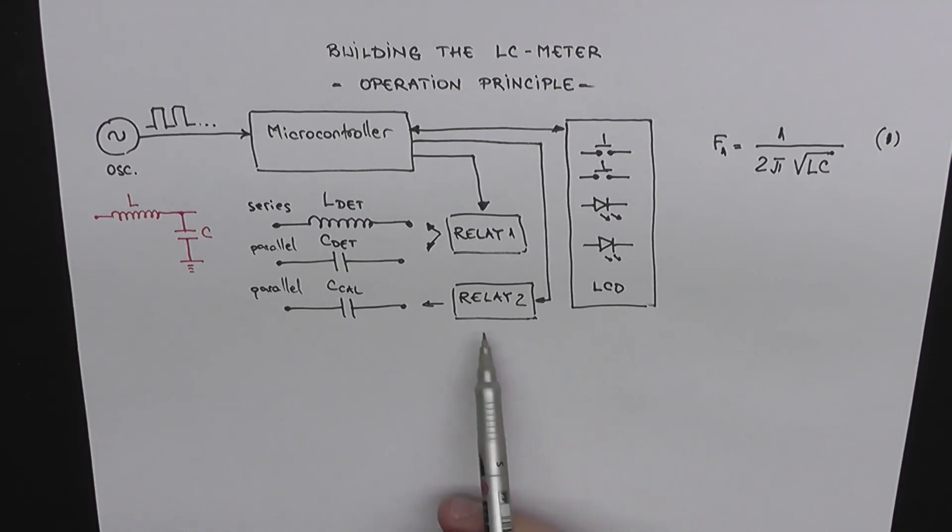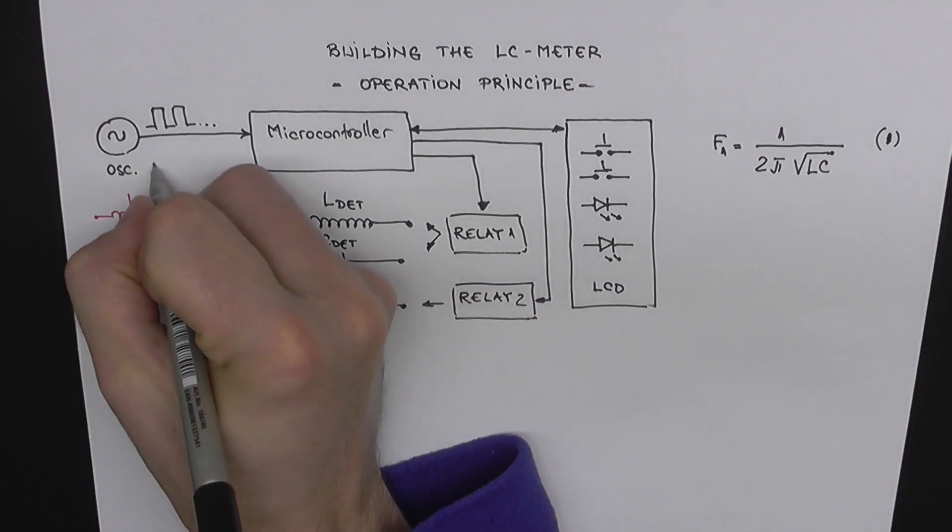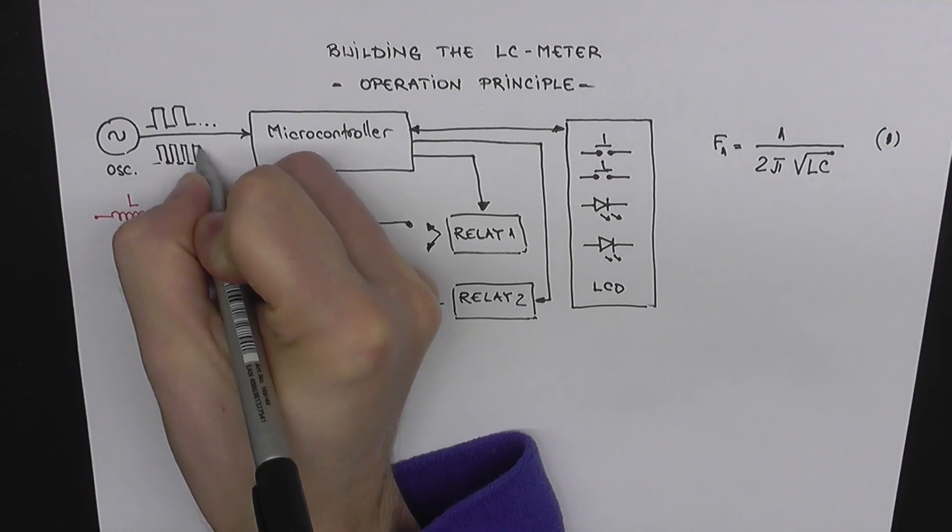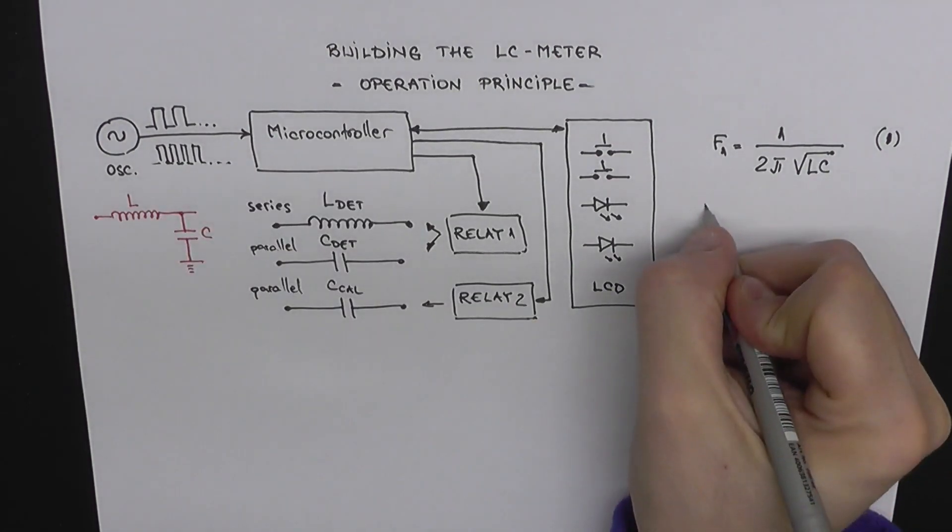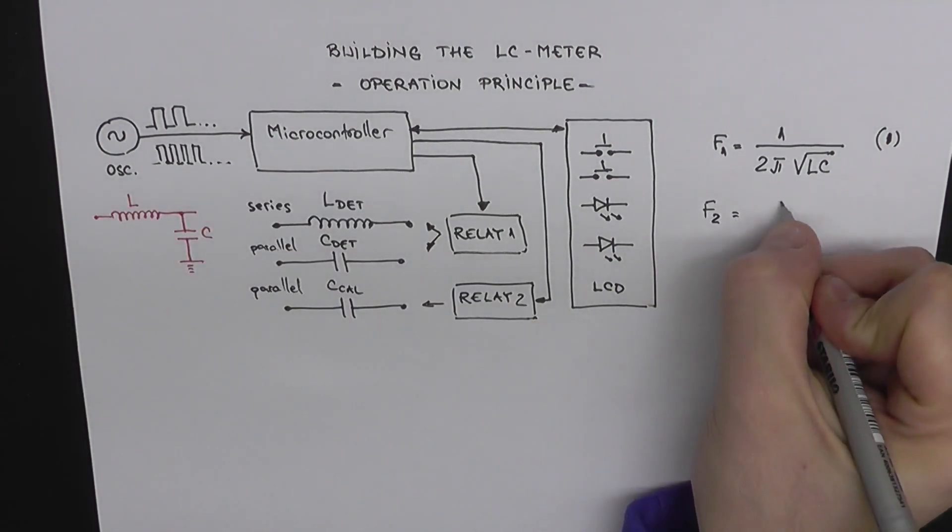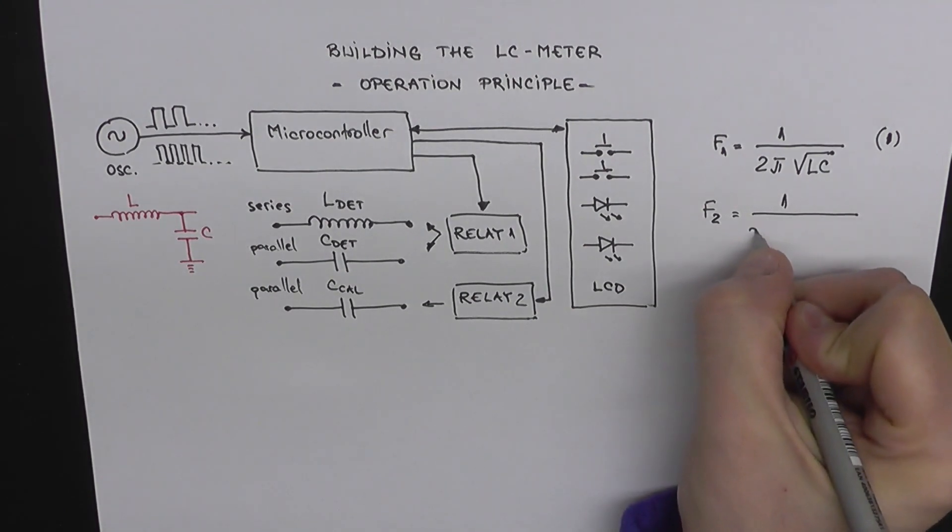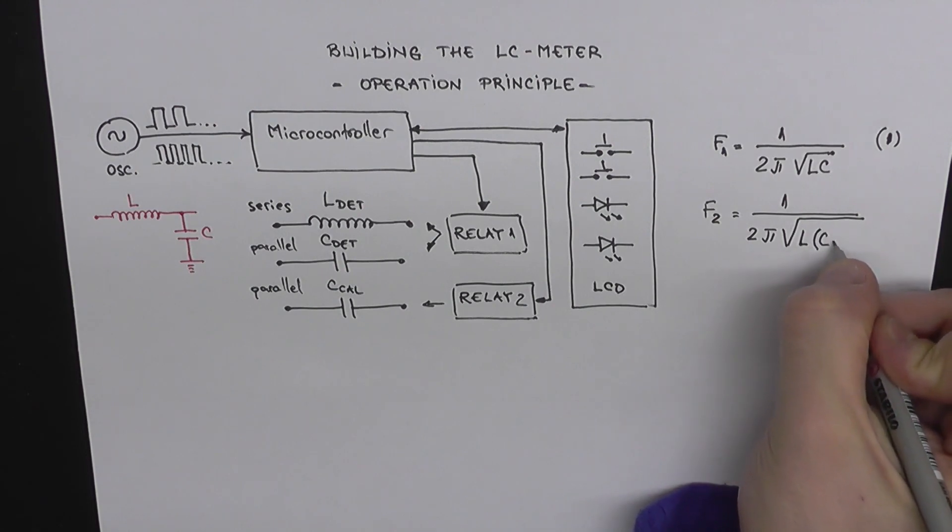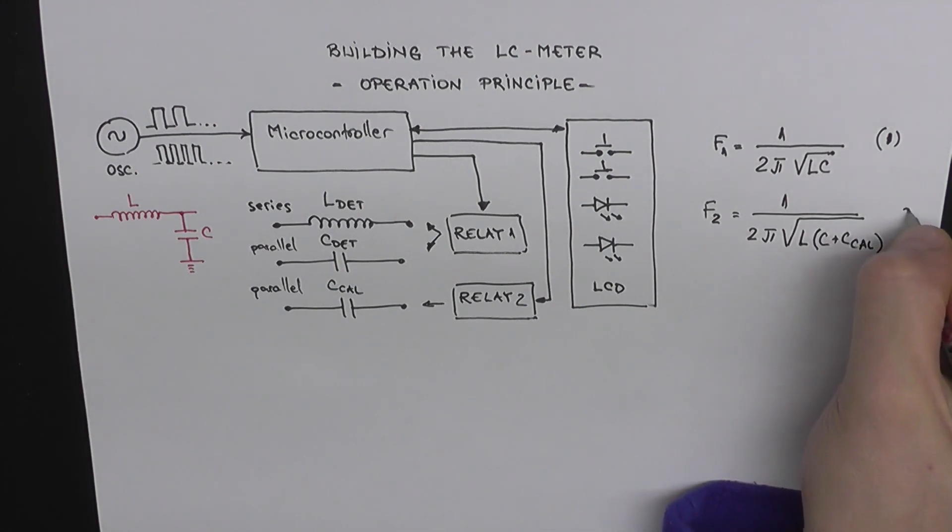Next, we want to switch relay 2 and add the calibration capacitor. And this will basically change the output frequency. And we can write F2 equals 1 over 2π square root from L multiplied with the parallel capacitance, C plus Ccal. And we're naming this equation number 2.